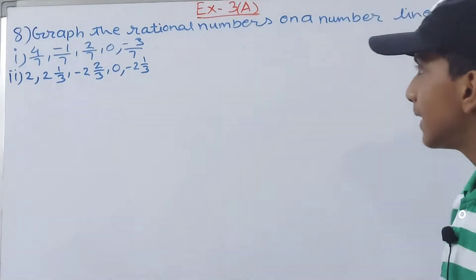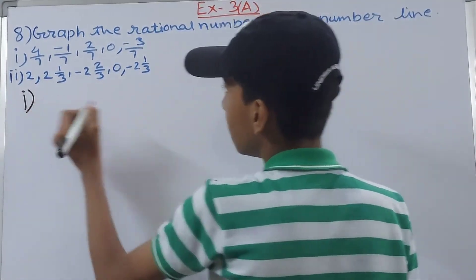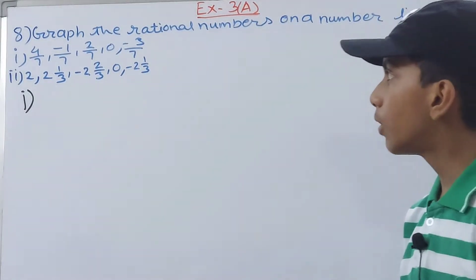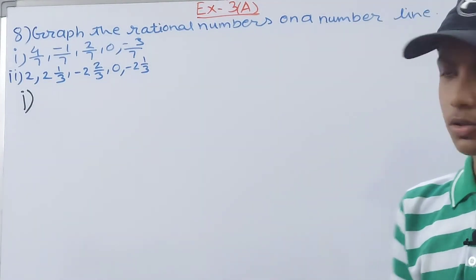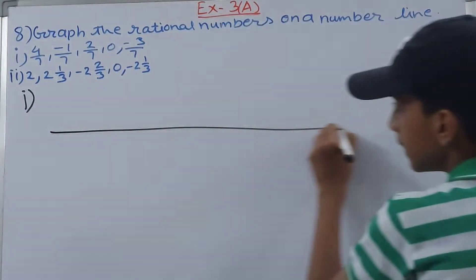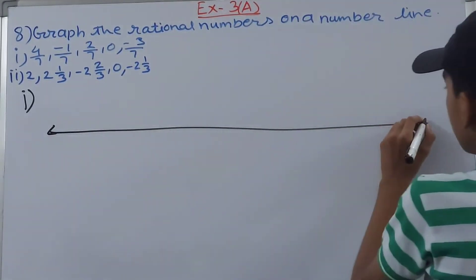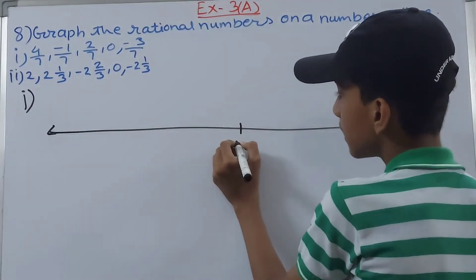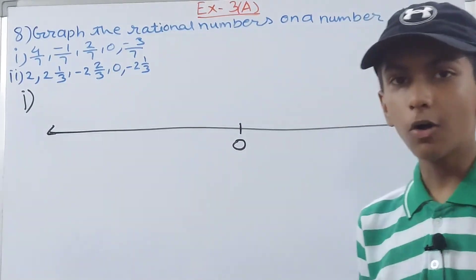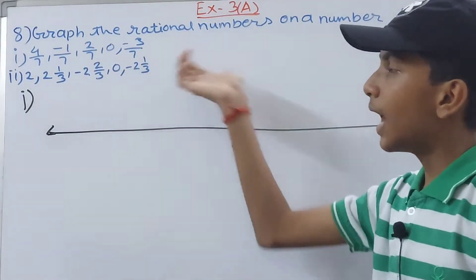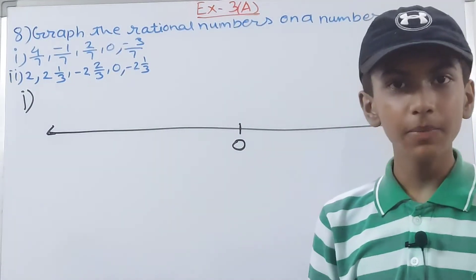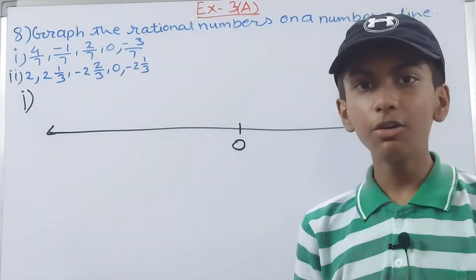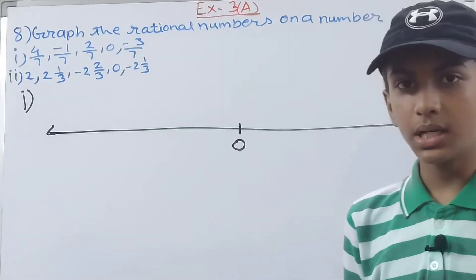In the first part, the rational numbers we have are 4 upon 7, minus 1 upon 7, 2 upon 7, 0, and minus 3 upon 7. First, draw a straight line and mark the center as 0. You can see that all the fractions have denominator 7, so between 0 and 1 we will divide the distance into 7 parts — not 5, not 10, but 7.